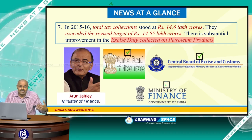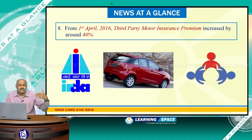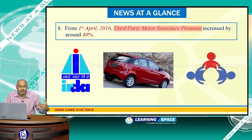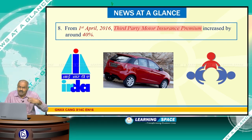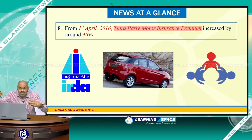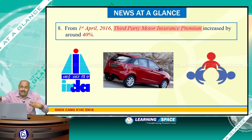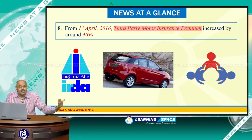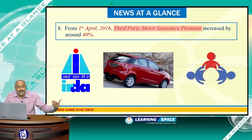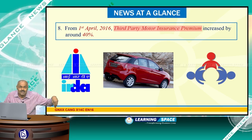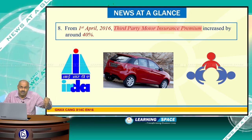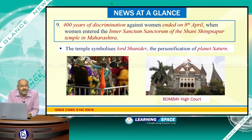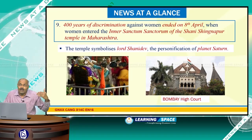From 1st April 2016, third party motor insurance premium increased by around 40 percent. Third party refers to a person walking on the road who is injured in an accident involving the vehicle, or the other vehicle involved in a collision. This third party motor insurance premium increased by around 40 percent from 1st April 2016.